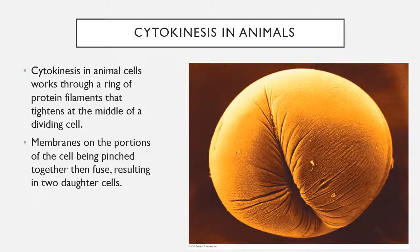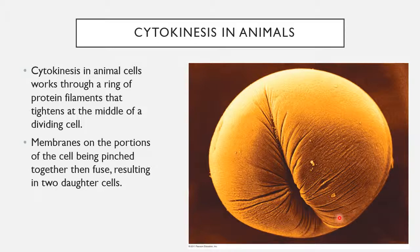Here's a picture of an animal cell going through cytokinesis — actually beginning to be pinched in the middle and starting to split apart. This works through a ring of protein filaments that tightens at the middle of the dividing cell. Think of it like taking a string and tying it around the middle of a balloon and pinching it. These protein filaments pull through the middle of the cell and pinch all the way through, resulting in one cell on one side and another cell on the other.